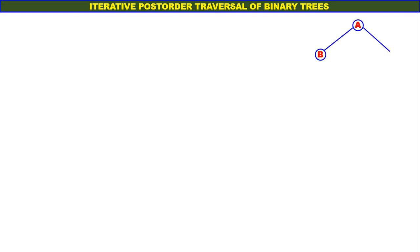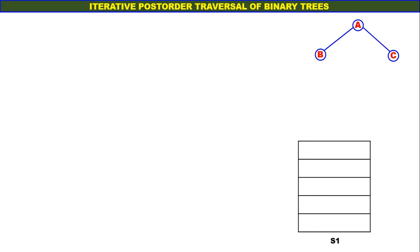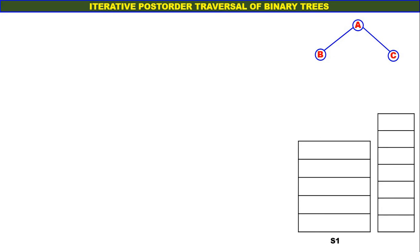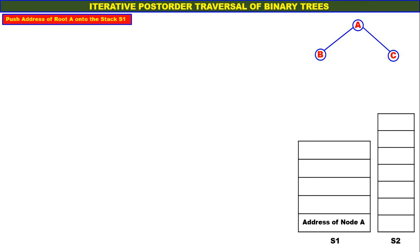Let us consider a binary tree. Here we consider two stacks, stack S1 and stack S2. Push address of root A onto the stack S1. Here the root is A, therefore address of root A is pushed onto the stack S1.